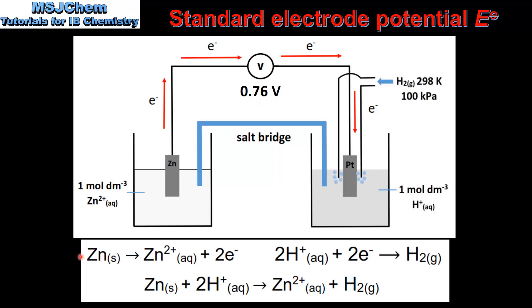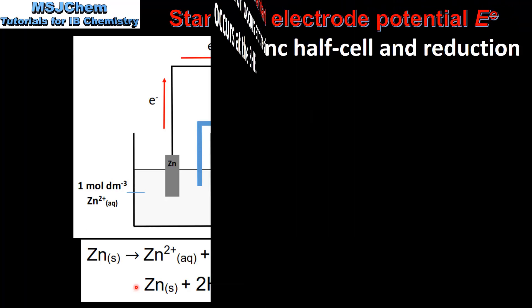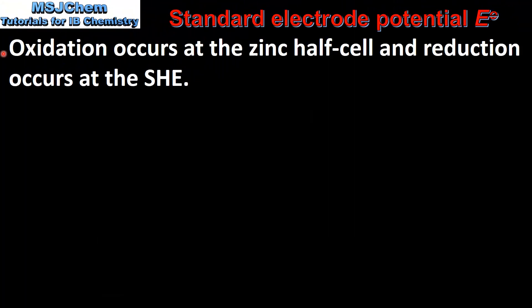Here we have the half equations for the reactions that take place in each half cell. We have the oxidation of zinc metal to form zinc ions, and the reduction of hydrogen ions to form hydrogen gas. Here we can see the net ionic equation for the reaction. Oxidation occurs at the zinc half cell and reduction occurs at the standard hydrogen electrode.